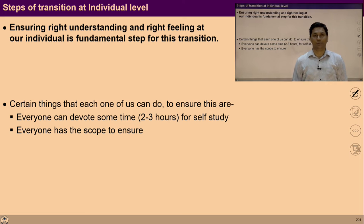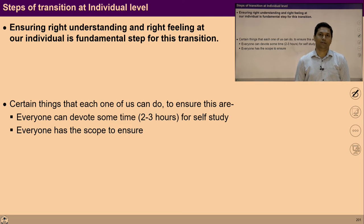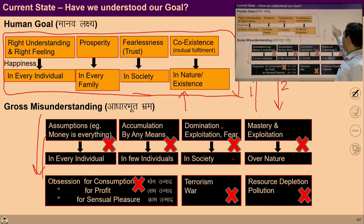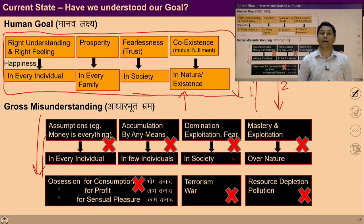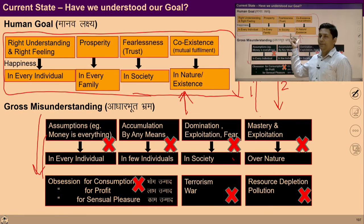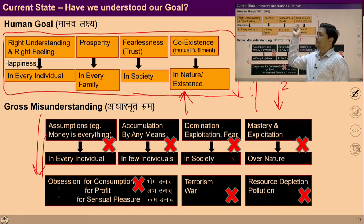Ask yourself: what kind of effort are you making? Are your efforts taking you from state one toward two, or from two toward one? At the level of individual, I can make enough effort that would be my participation to move toward the desired state of society.